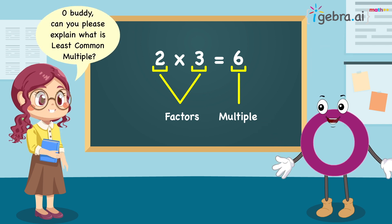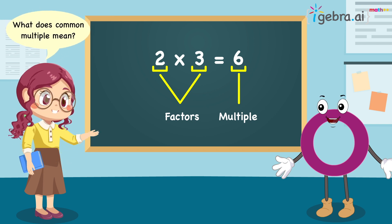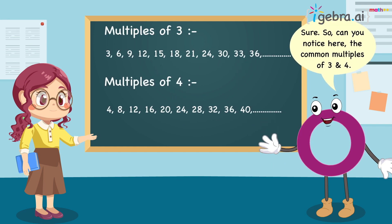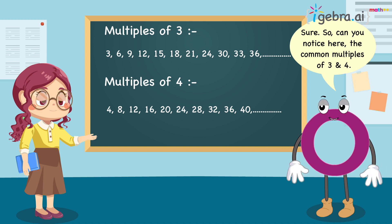Oh, Obadi. Can you please explain what is least common multiple? What does common multiple mean? Sure. So, can you notice here the common multiples of 3 and 4?